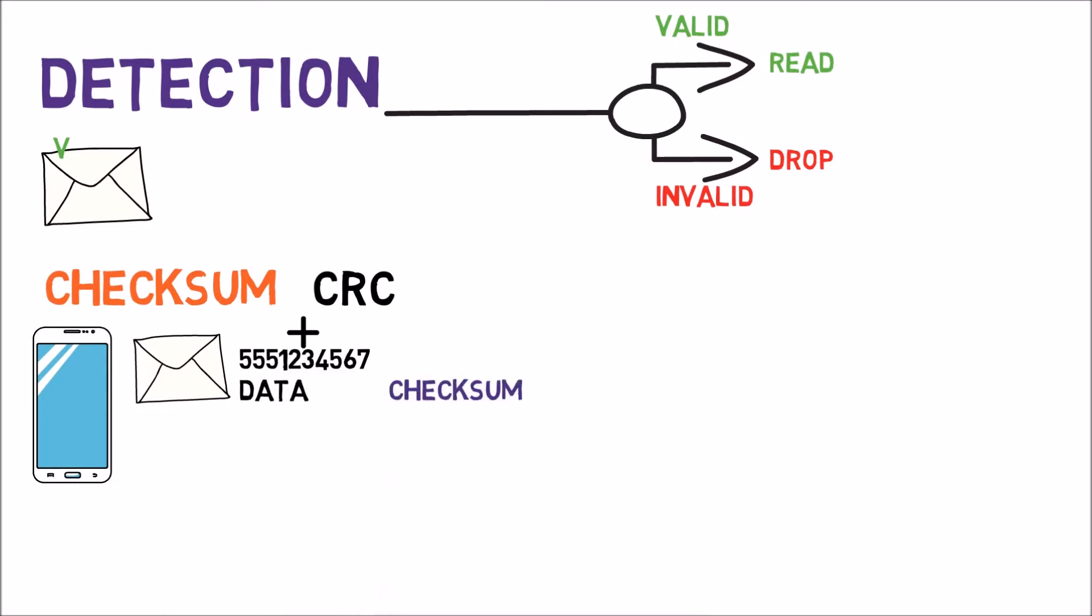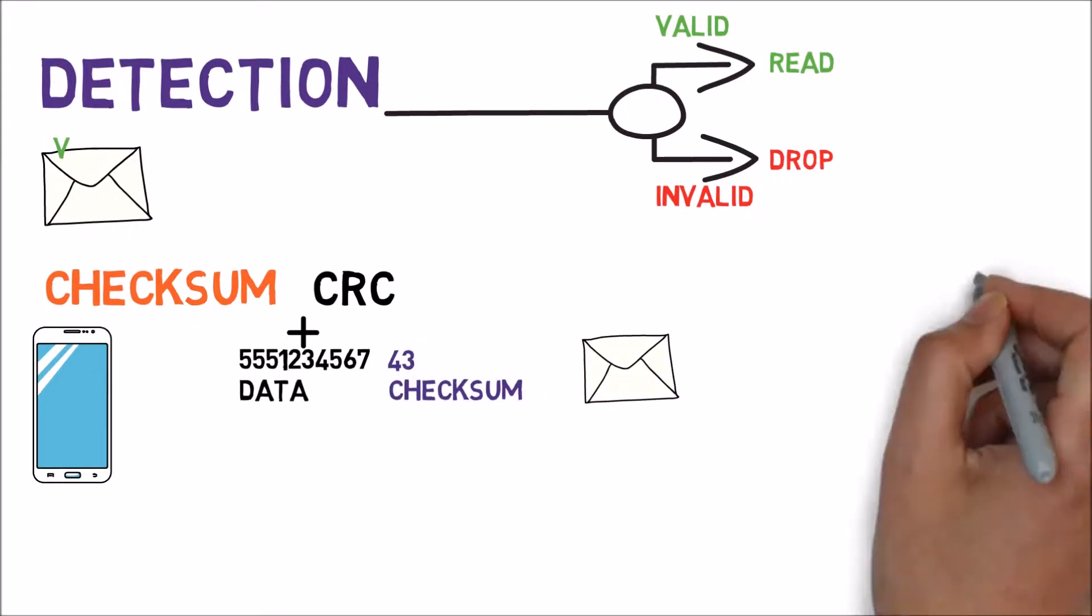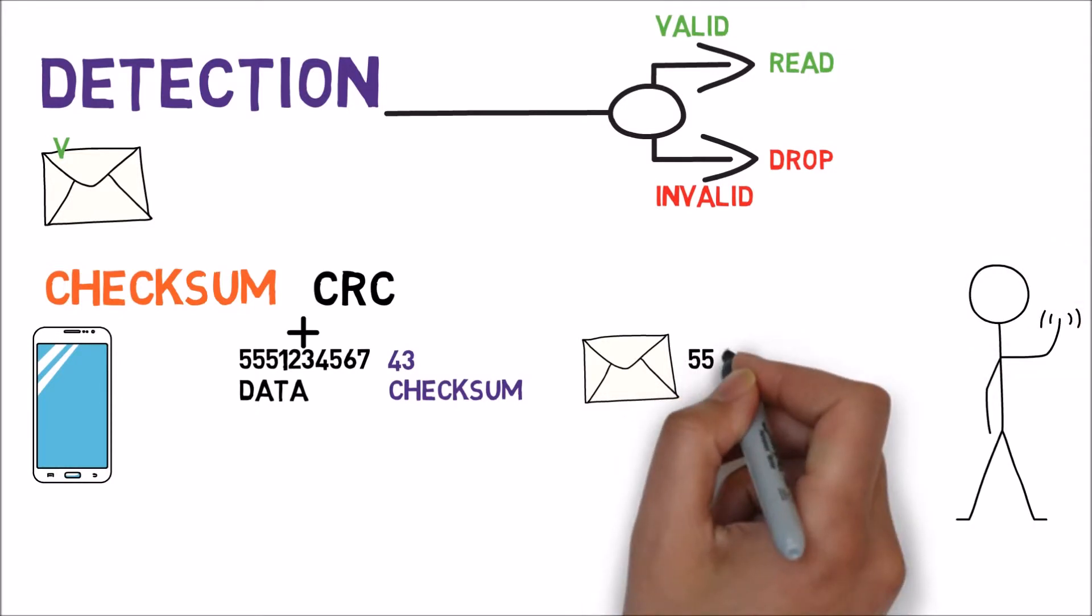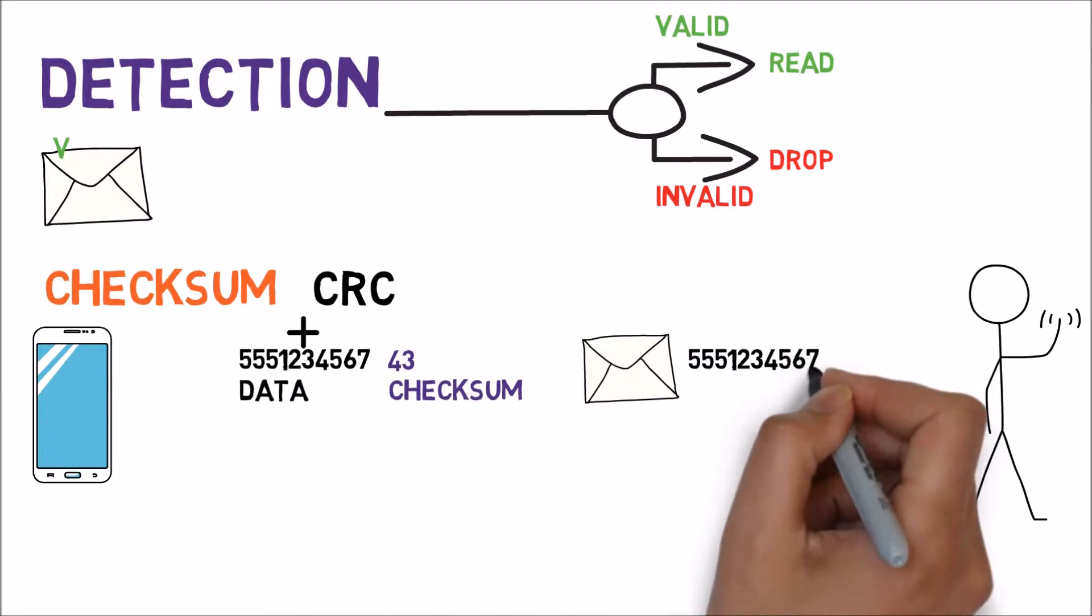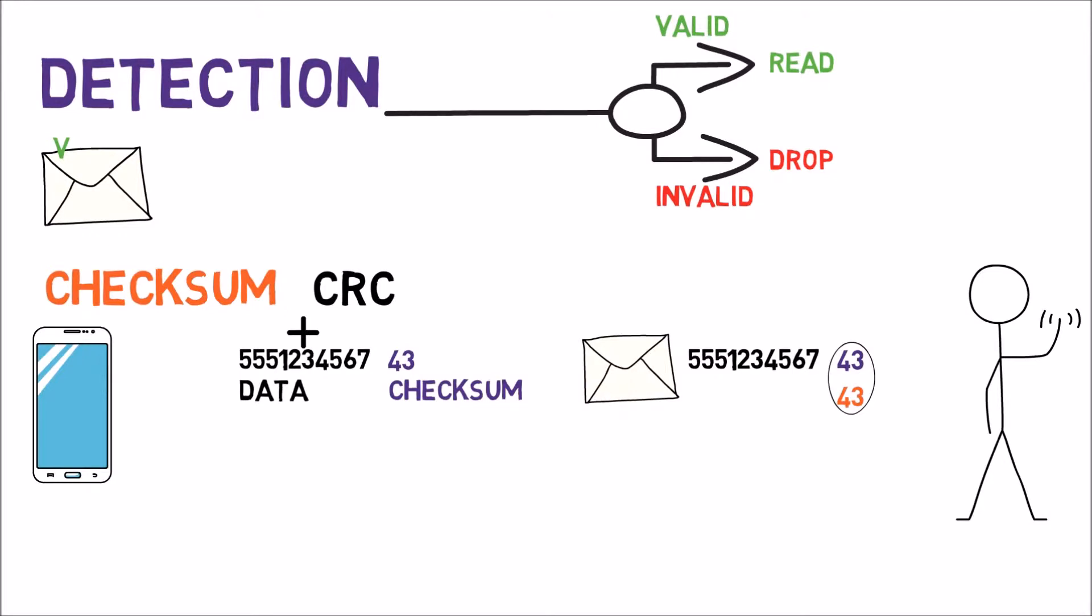Now the sender won't only send the phone number but also the checksum value right after it. So in this example, the sender would send... Now as the receiver, I can do the same thing. I will read the phone number and calculate the checksum. I shall add the digits and get 43. Since I received the correct result, I assume that the frame is valid.